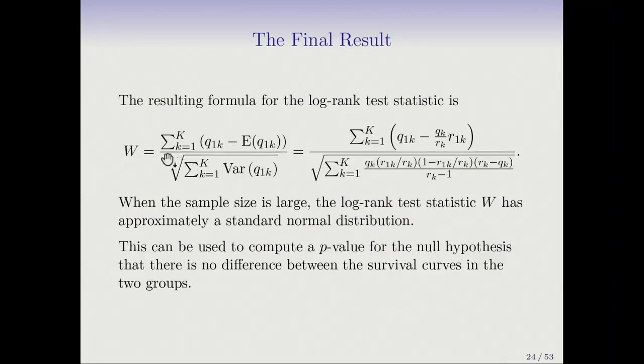And as is always the case, when forms a normalized test statistic, what you do is you say, if the sample size is large, this is going to be approximately normal zero one, standard normal distribution. So we can look at a normal table. We can compare the W to a normal table and determine whether what we're seeing is a departure large enough that we would or would not expect it by chance. And we get a P value from that.